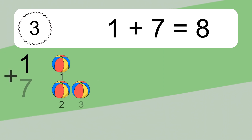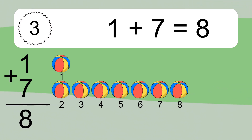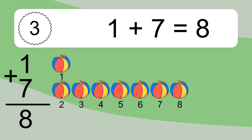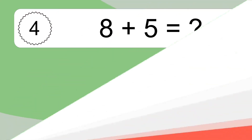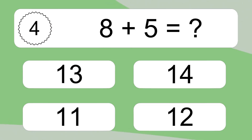1 plus 7 equals 8. Let's count it. 1, 2, 3, 4, 5, 6, 7, 8. 8 plus 5 equals what?